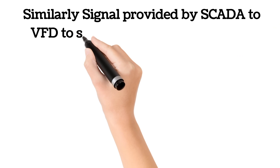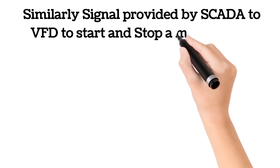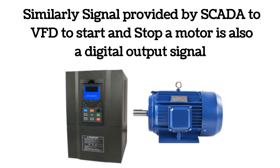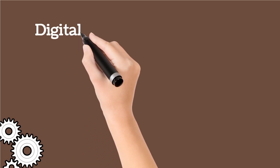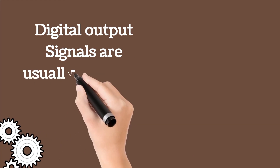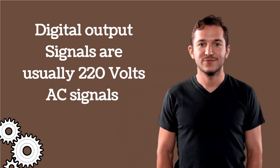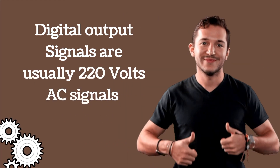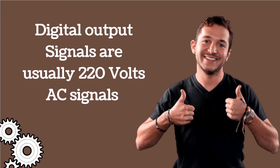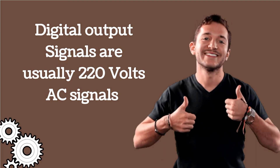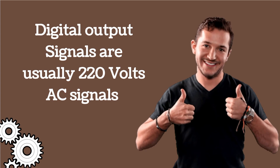Similarly, the signal provided by SCADA to a VFD to start and stop a motor is also a Digital Output (DO) signal. Digital output signals are usually 220 V AC signals. Now, a question for you: what is motor load feedback and motor trip feedback?